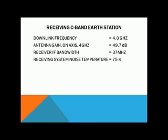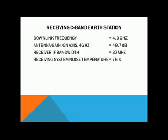Receiving C-band earth station: downlink frequency 4 GHz; antenna gain on axis at 4 GHz is 49.7 dB; receiver IF bandwidth 37 MHz; receiving system noise temperature 75 K.